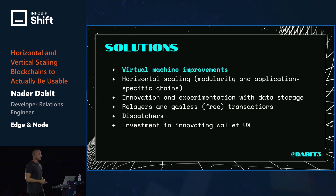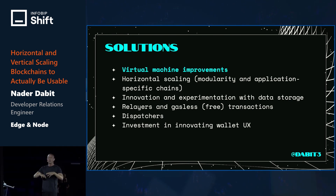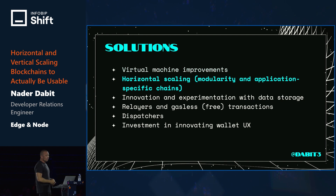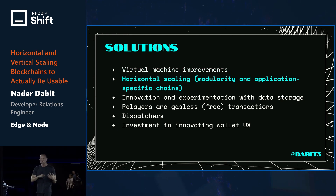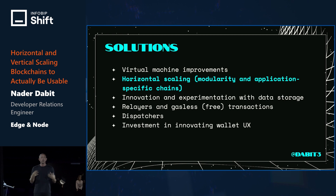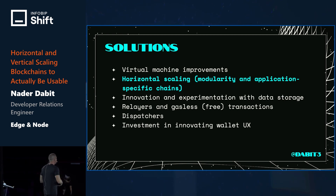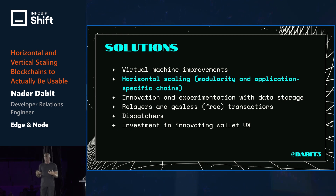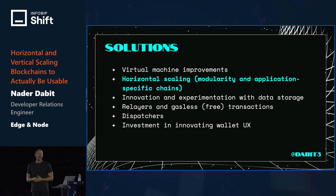We have innovations at the virtual machine level — this can be seen as vertical scaling: adding more resources, making the actual execution environment faster. What we and much of the industry are focused on is more of a horizontal scaling approach: modular blockchains and application-specific blockchains where instead of sharing compute with everyone else in the world, you have your own compute for your application alone.